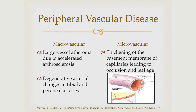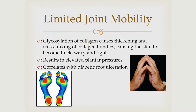PVD is a major, major risk factor for diabetic foot ulcers and poor outcome. Limited joint mobility is also significant. Glycosylation of collagen causes thickening and cross-linking of collagen bundles, causing the skin to become thin, waxy, and tight, and results in joint immobility. Less flexible joints with decreased range of motion puts increased pressure, particularly on the toe joints, especially the big toe joint when walking. That's why right under the first metatarsal head is one of the most common spots you'll find a diabetic foot ulcer.